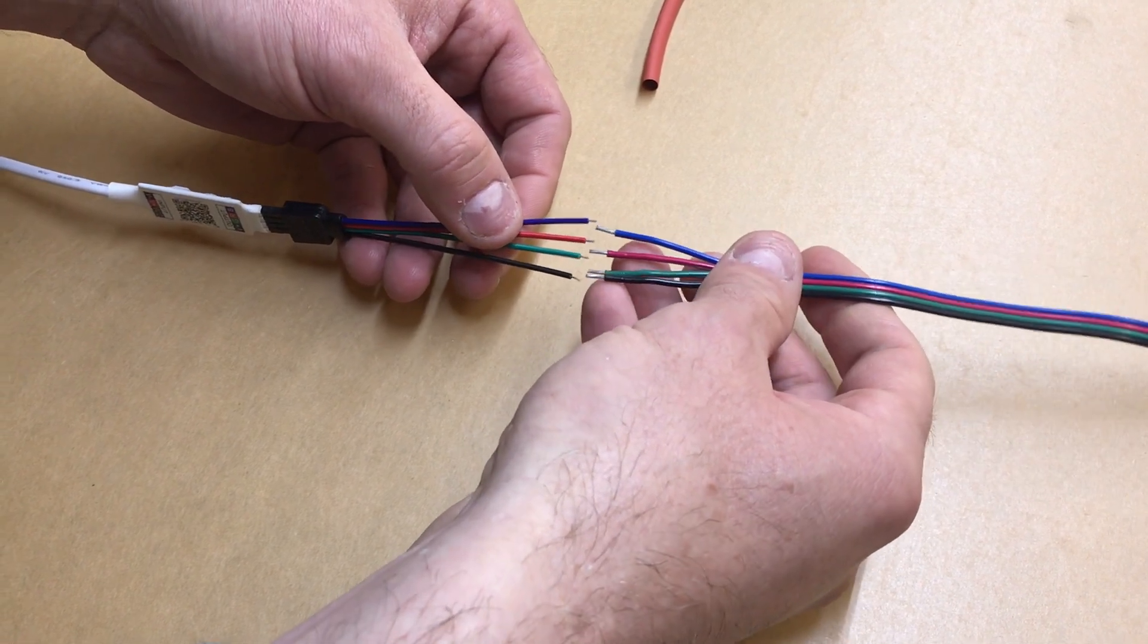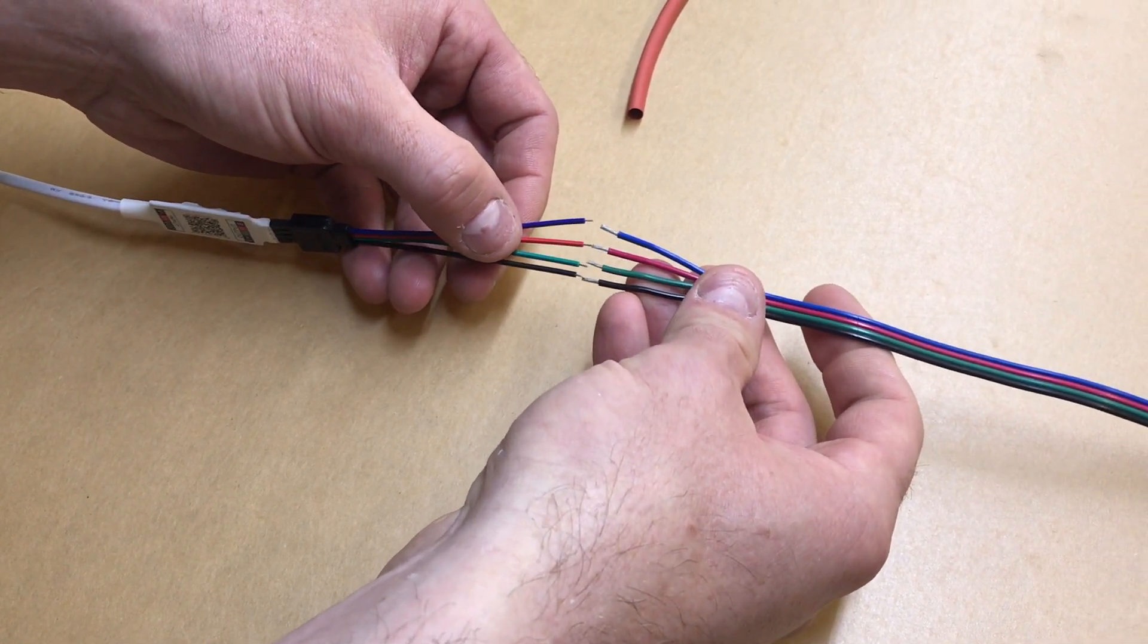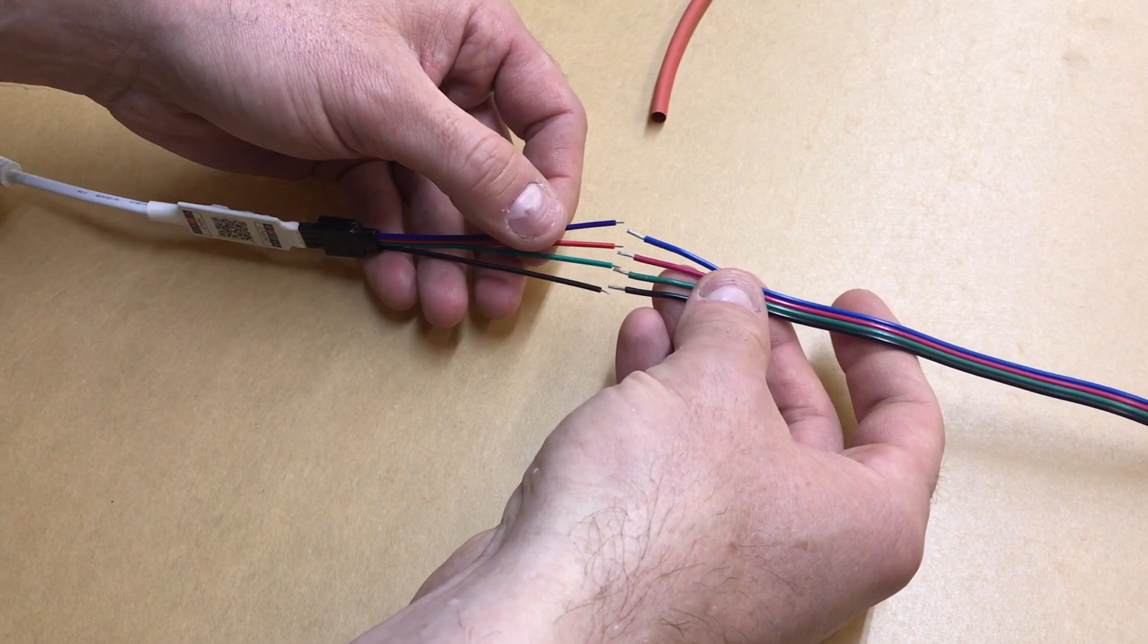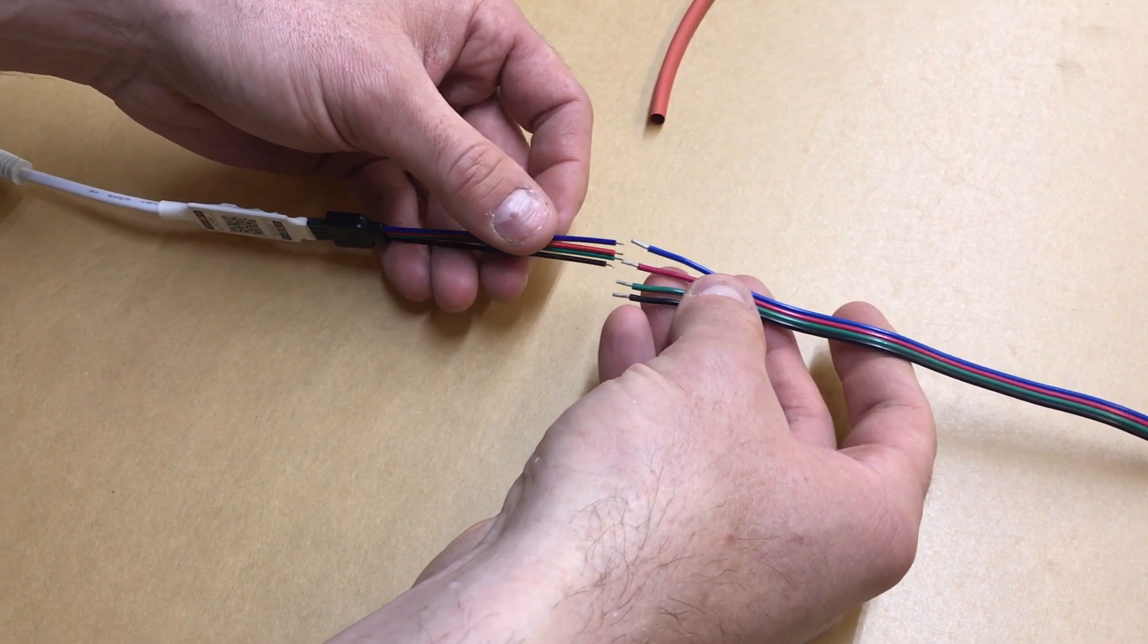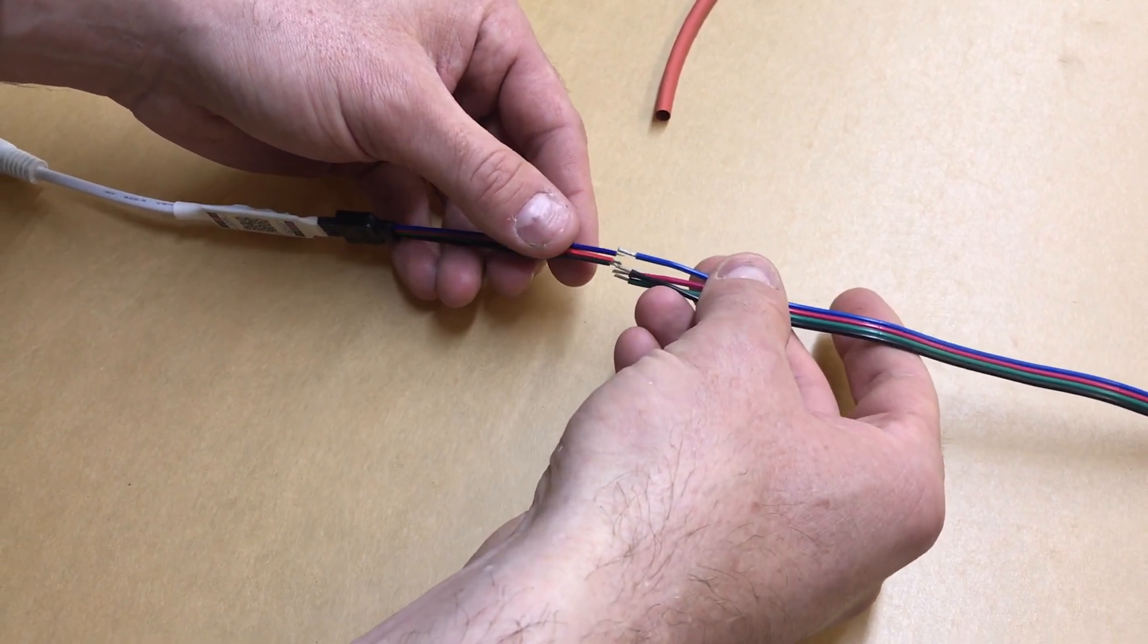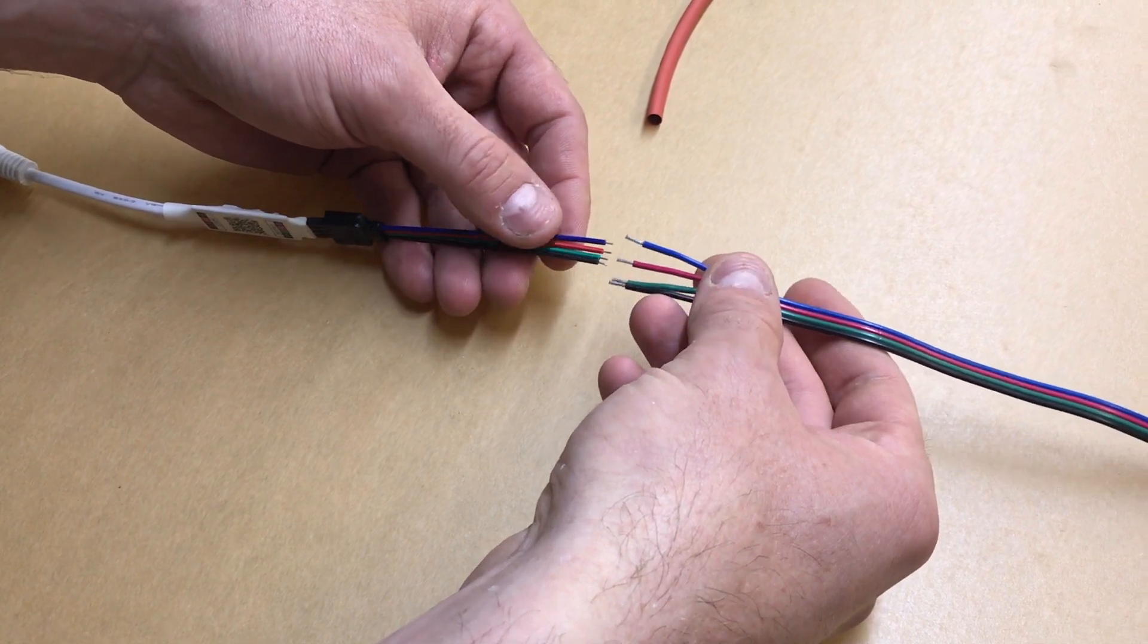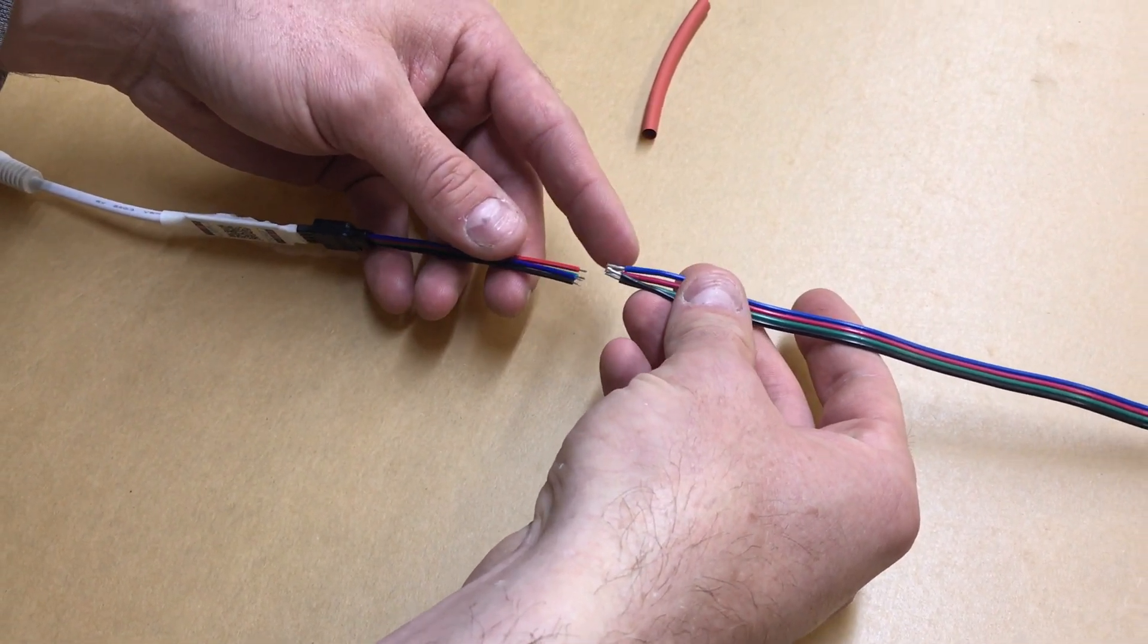So you just take this, solder each one, shrink tube it, solder, shrink tube, solder, shrink tube until you have everything connected. Then you could possibly also wrap it up with some electrical tape once everything is isolated so the channels do not touch.